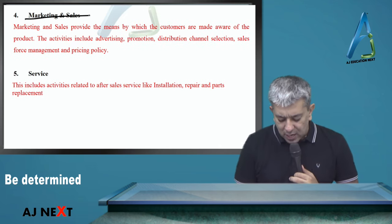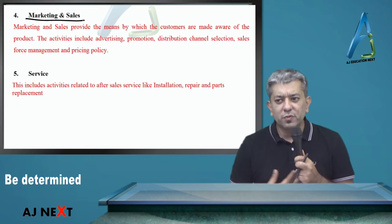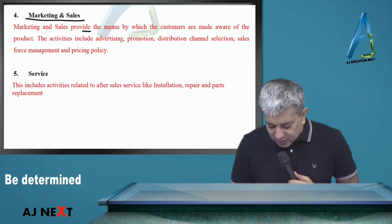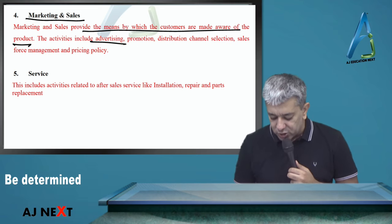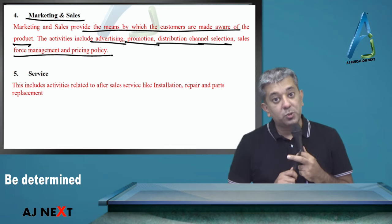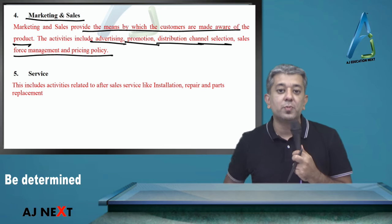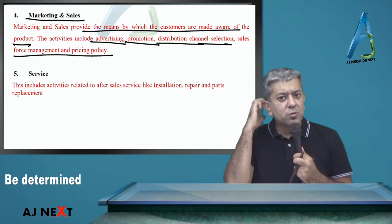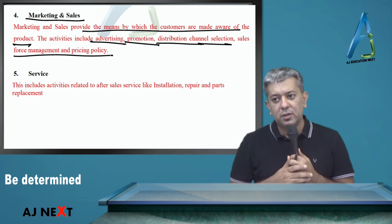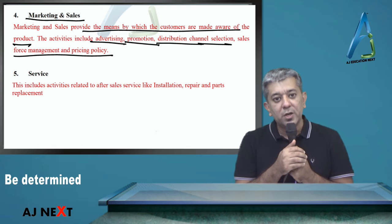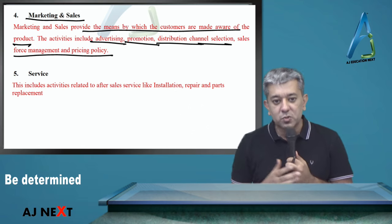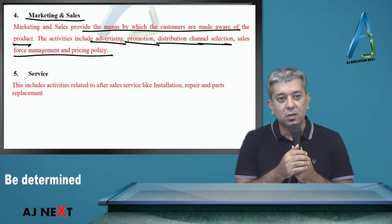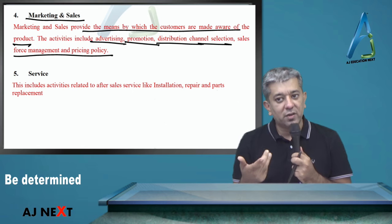Us ki baad: marketing and sales. Aaj kal ki dunya hai — you might have a mediocre product, but if you market it and make it slightly more attractive, it sells. Marketing and sales provide the means by which customers are made aware. This includes advertisement, promotion, distribution channels, and sales force management. Aaj kal jo payment options aate hain — like Paytm, PhonePe, debit card, credit card — that also forms part of your sales. Example, hum loog ne case study kya tha of SMART — vaha pe how many options you can provide to a user whenever he is paying. Online payments also help reduce fraud.